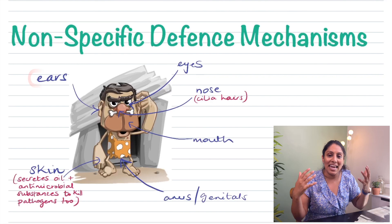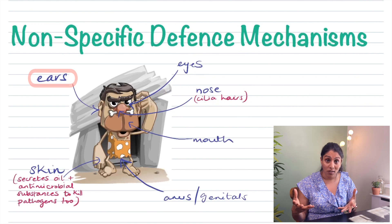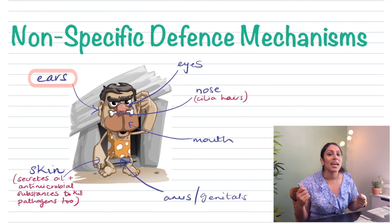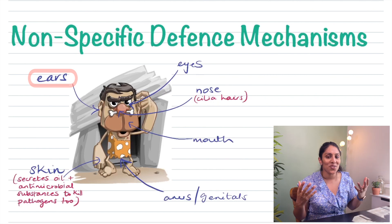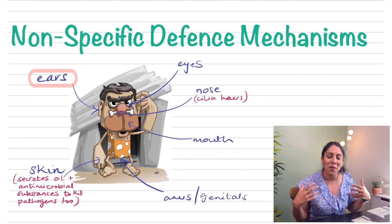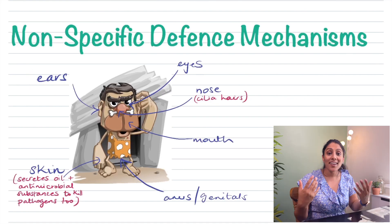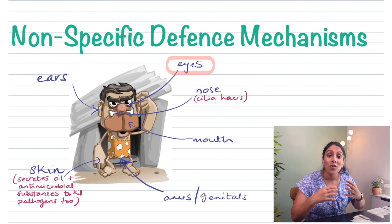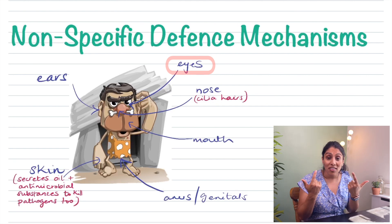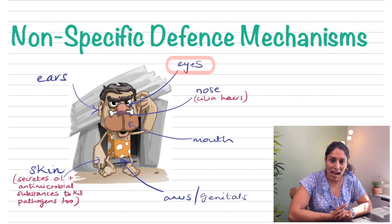Take the ears for example — they produce earwax. Socially, we use cotton buds to remove earwax, but your body actually wants to keep it there because it stops pathogens from entering. Another example is your eyes: tears are full of enzymes, so if a pathogen tries to enter through your eyes, these enzymes will break them down until they are no longer active.